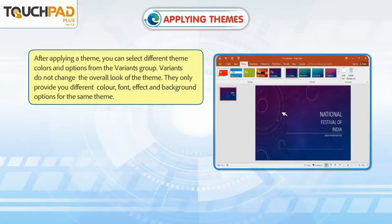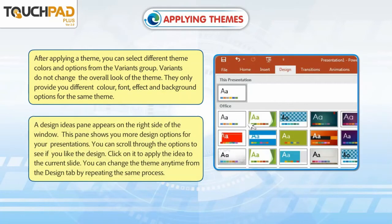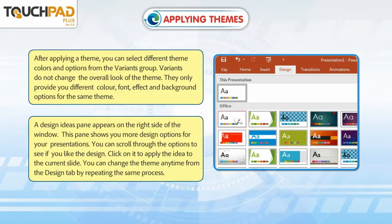After applying a theme, you can select different theme colors and options from the Variants group. Variants do not change the overall look of the theme — they only provide different color, font, effect and background options for the same theme. A Design Ideas pane appears on the right side of the window, showing more design options. You can scroll through the options and click on one to apply it to the current slide. You can change the theme any time from the Design tab by repeating the same process.